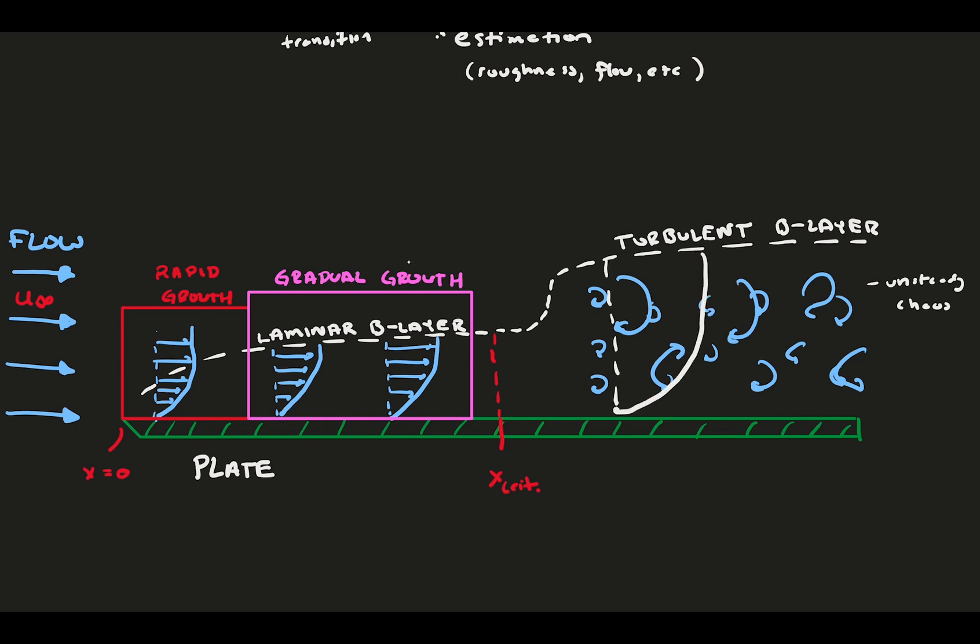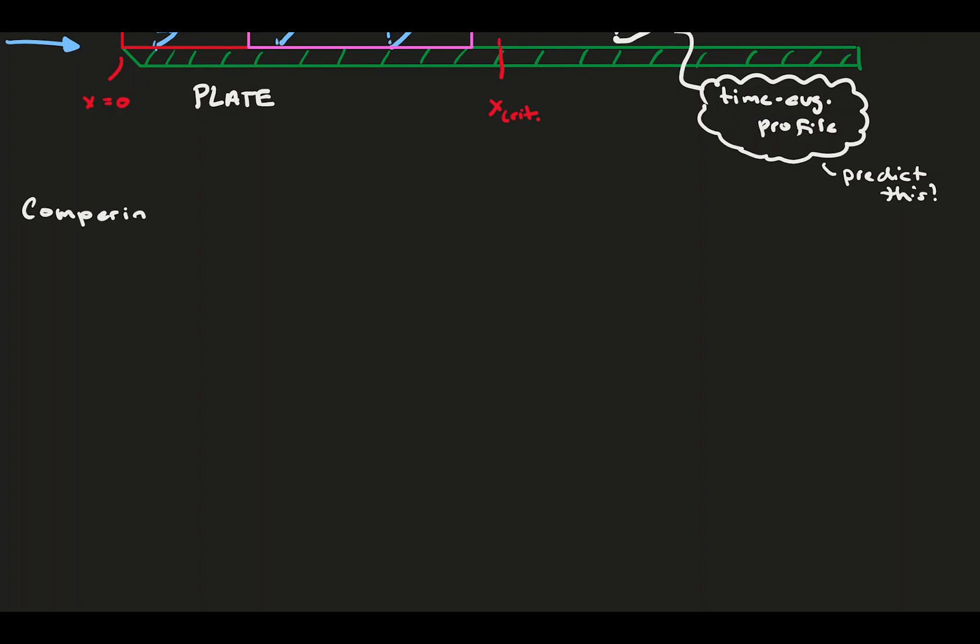In the time average, there is an organized and relatively smooth boundary layer profile. Our goal is to be able to define and predict this profile so that we can use it for analysis. Laminar and turbulent flows are inherently different, even statistically. Let's compare a typical laminar and time average turbulent velocity profile.